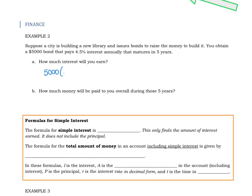Well, you will earn 4.5% of that $5,000 that you basically loaned them, and you're going to earn that five different times because the bond is going to mature in five years. That means you will earn a total of $1,125 in interest.